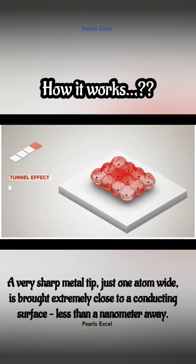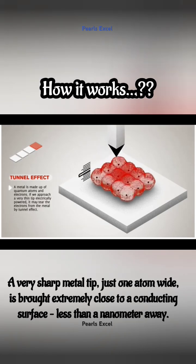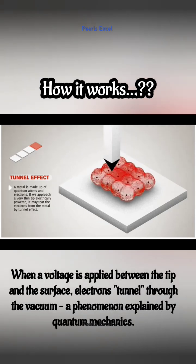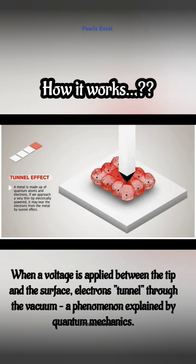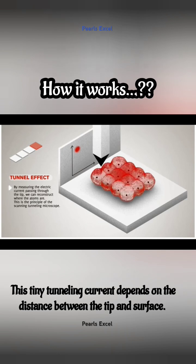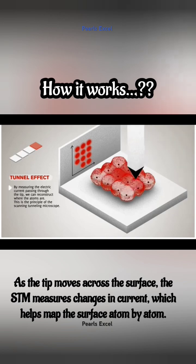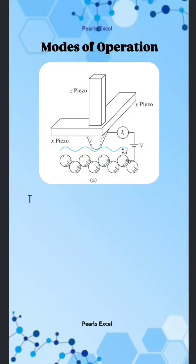A very sharp metal tip, just one atom wide, is brought extremely close to a conducting surface — less than a nanometer away. When a voltage is applied between the tip and the surface, electrons tunnel through the vacuum, a phenomenon explained by quantum mechanics. This tiny tunneling current depends on the distance between the tip and surface. As the tip moves across the surface, the STM measures changes in current, which helps map the surface atom by atom.